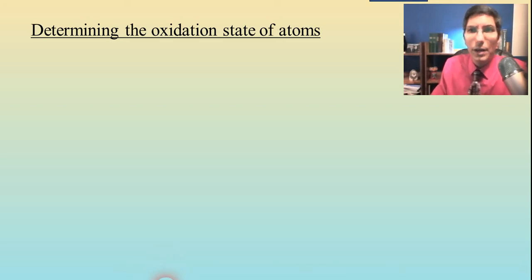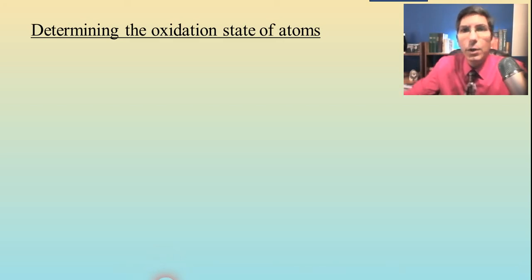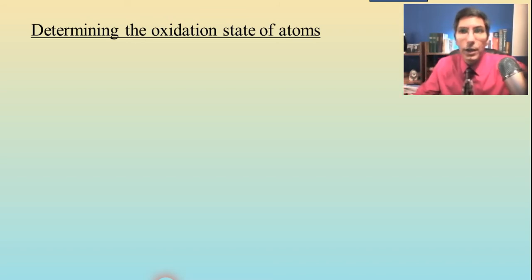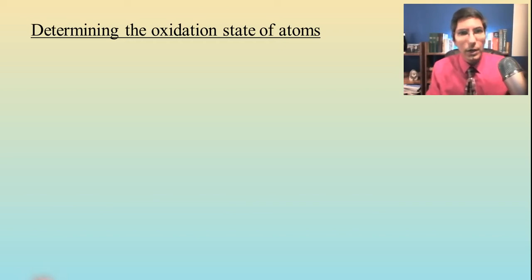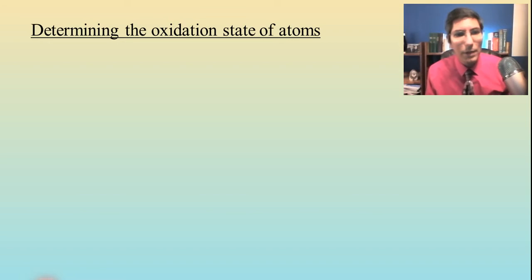Welcome back to AP Chemistry. I'm Jeremy Krug, and this video is all about determining oxidation state of atoms, or the charge of atoms in any compound or ion that you might encounter. Now, how do we do that? Well, there are several simple rules. These are in order from the easiest, and they work their way up to some more complex rules.